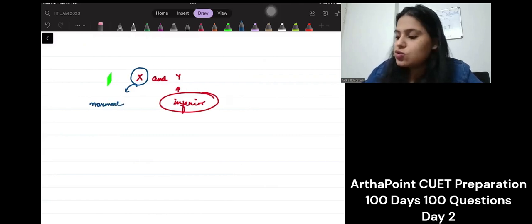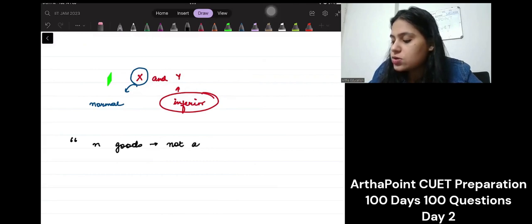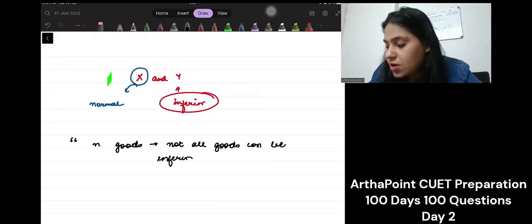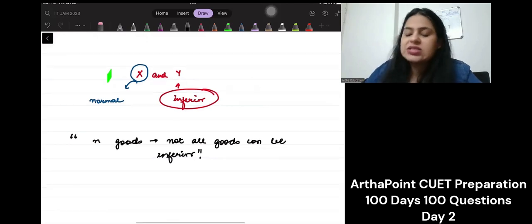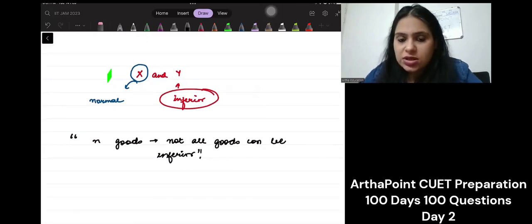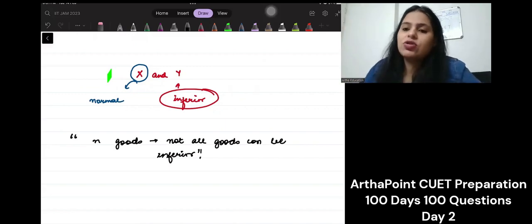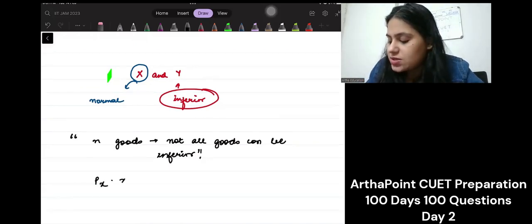In DSC first semester, we used to get this proof that if you have N goods, then not all goods can be inferior. Why? For example, if I just take two goods, then we can extend it to N using mathematical induction. Let's say we have this budget equation: PX into X plus PY into Y equals income.